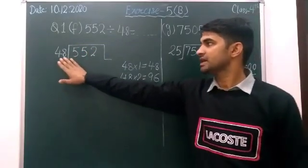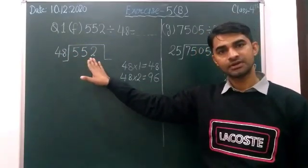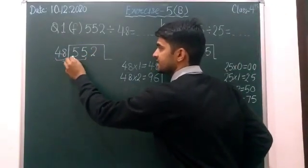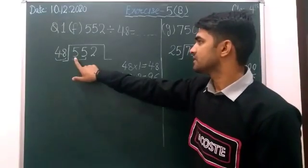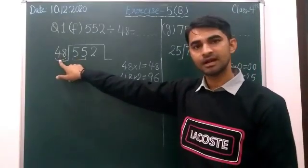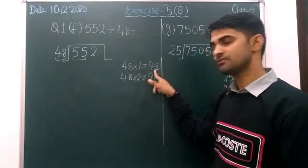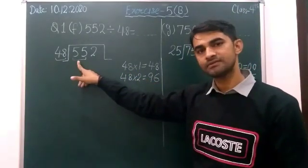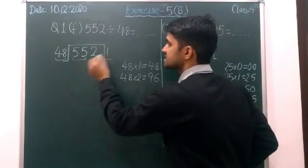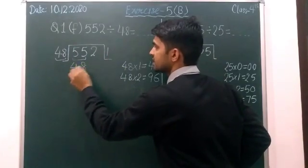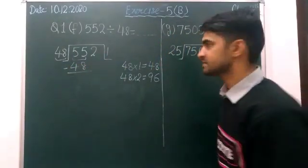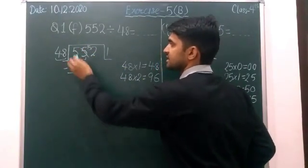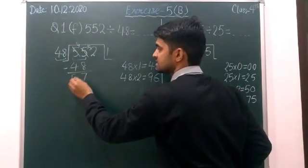Okay now in this question we have to divide 552 by 48. So here two digit number so we will take here also two digit number. For 55, 48. 48 ones are 48 and 48 twos are 96. 96 greater of 55 so we will take 48 ones are 48. Now we will subtract it. 50 minus 8, 7 it becomes 4. 4 minus 4, 0.